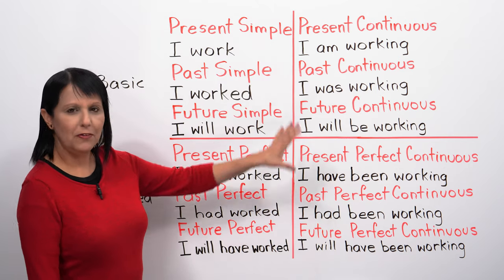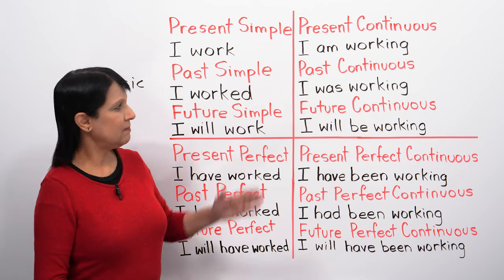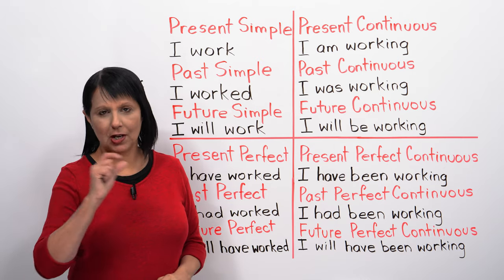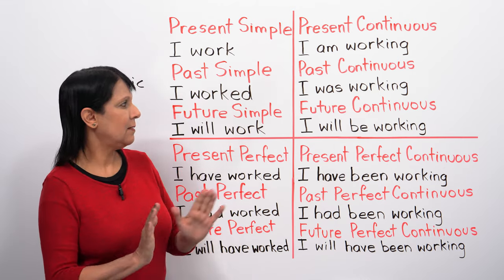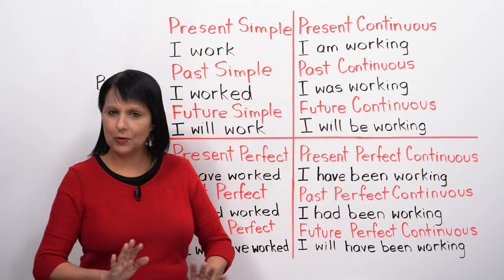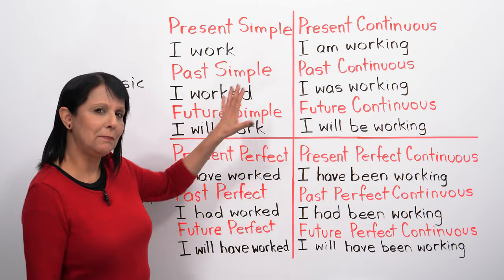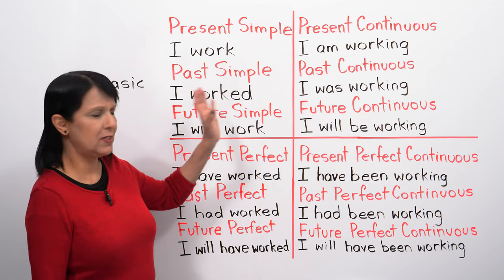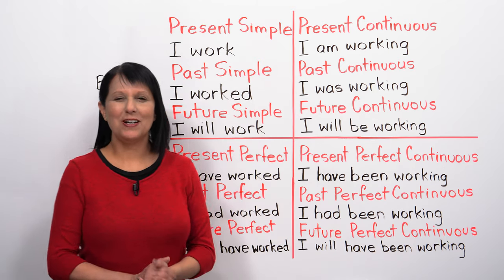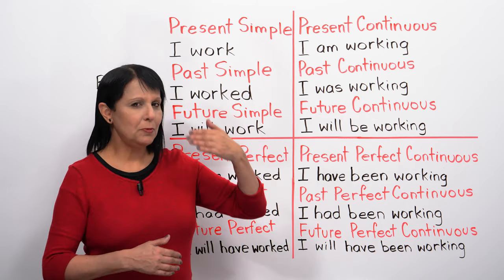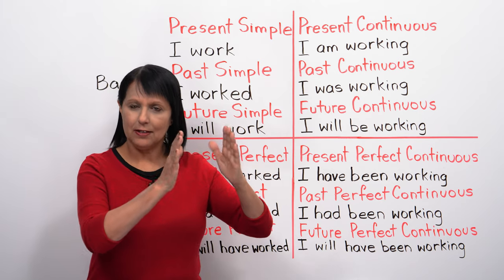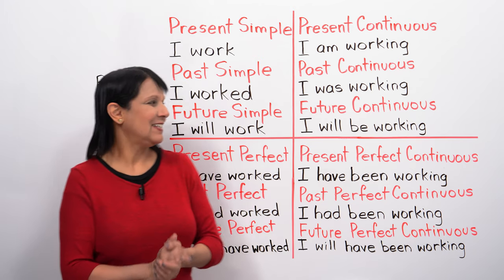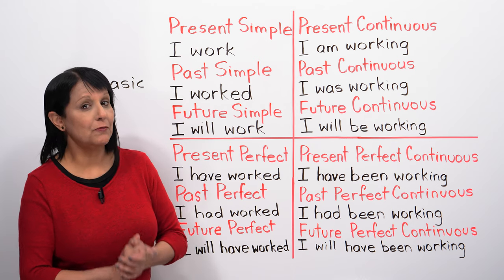On the board, I've written the 12 tenses. In red are the names of the tenses, and in black is an example of each tense. But right now, you don't have to worry about that. This is just to give you the big picture. Don't worry if you don't know the names of these tenses or the examples — it doesn't matter at all.